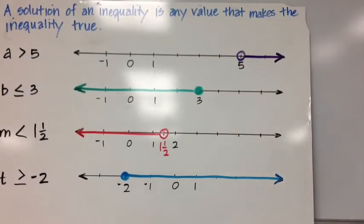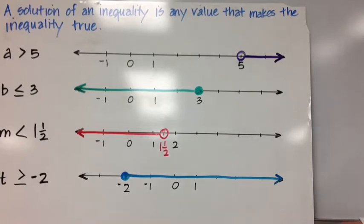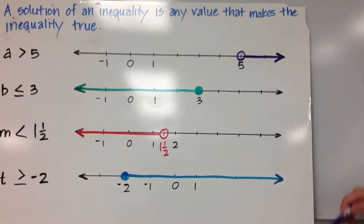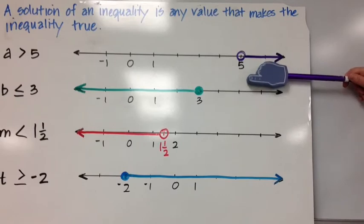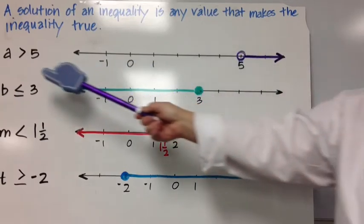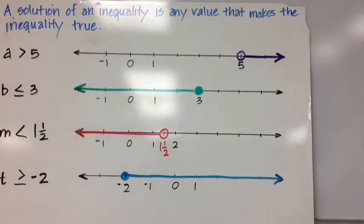A solution of an inequality is any value that makes the inequality true. So if we say A is greater than 5, we know that 6, 7, 5.2, and 1 million are all greater than 5. To state the solution set of an inequality, we do so with a graph, which shows all the solutions that make that inequality true.